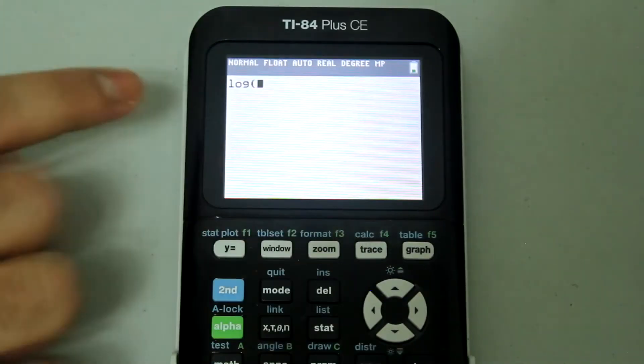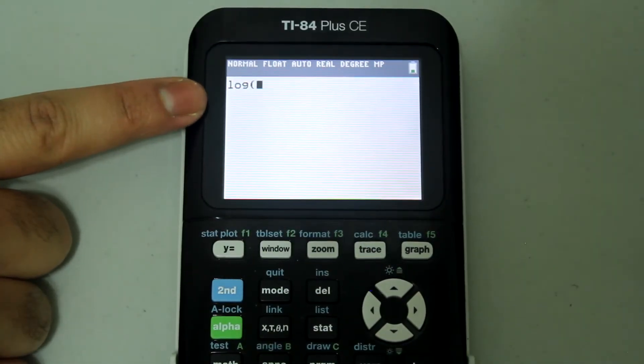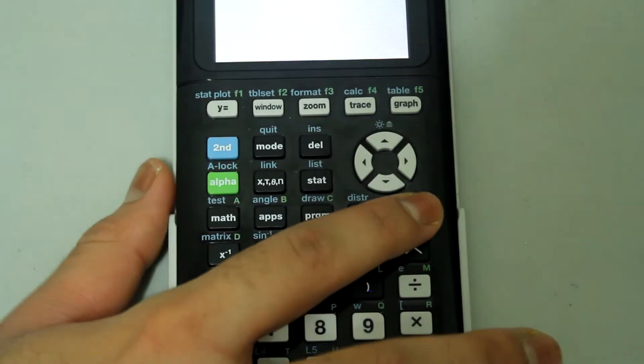If you just use this button for log, the base by default is 10. So you don't want to use that one. So clear that out,